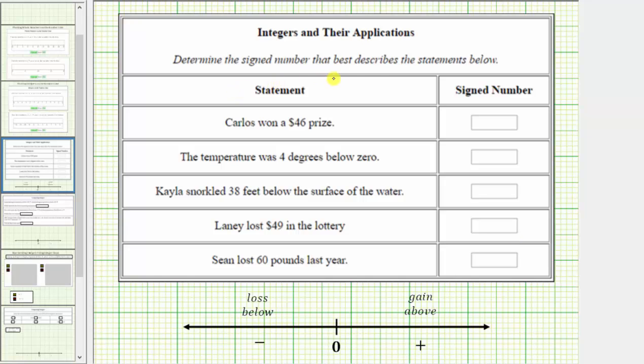We are asked to determine the signed number that best describes the statements below. The first statement is Carlos won a $46 prize. Because he won $46, this would best be described by a positive 46 because he has a gain of $46.